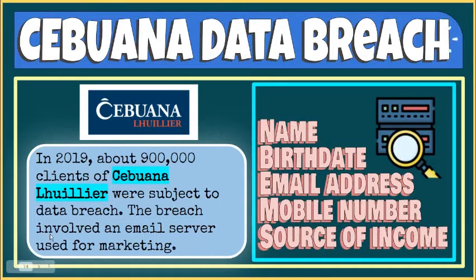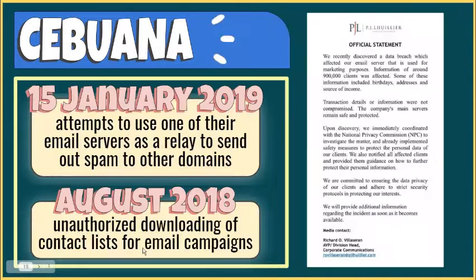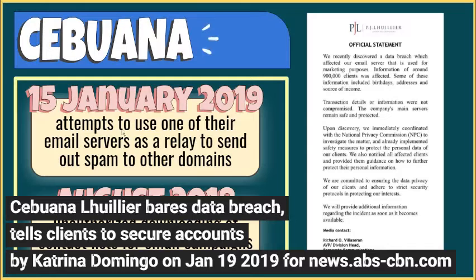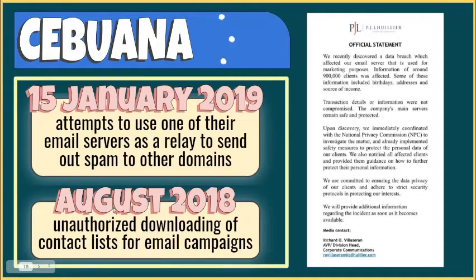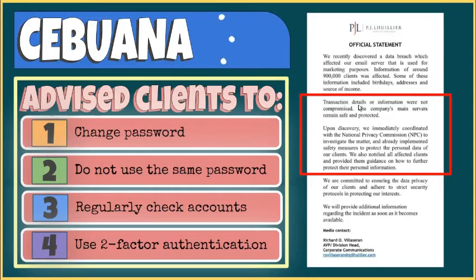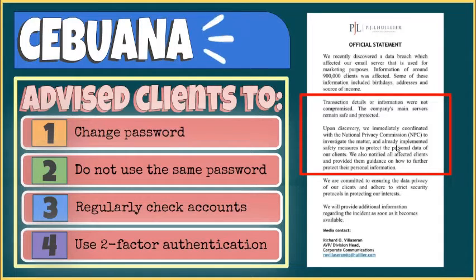The breach involved an email server used for marketing. The firm detected on January 15, 2019 attempts to use one of their email servers as a relay to send out spam to other domains. Further investigations discovered unauthorized downloading of contact lists used as recipients for email campaigns. These unauthorized downloads happened on August 5, 8, and 12, 2018. They stated that transaction details were not compromised and that the company's main servers remained safe and protected. Cebuana reported the incident to the National Privacy Commission and notified all affected clients, advising them to immediately change passwords as a precautionary measure.